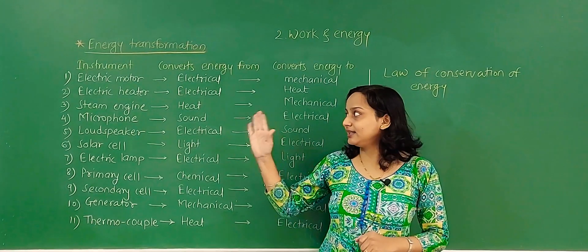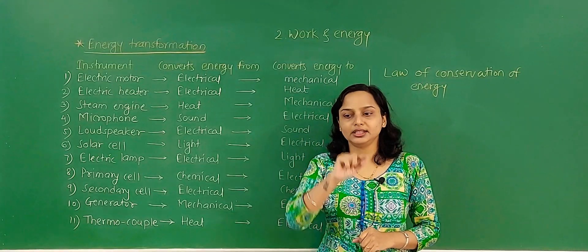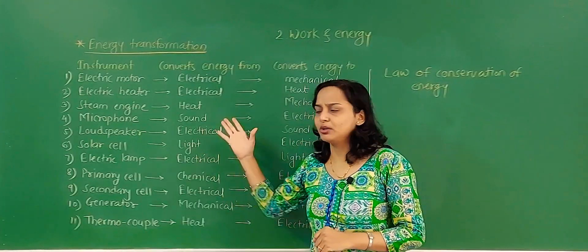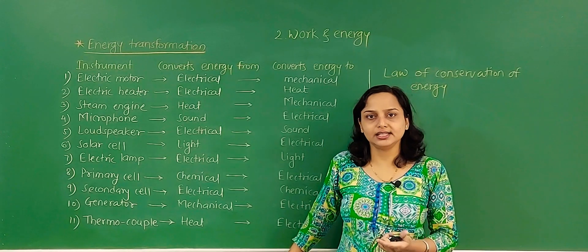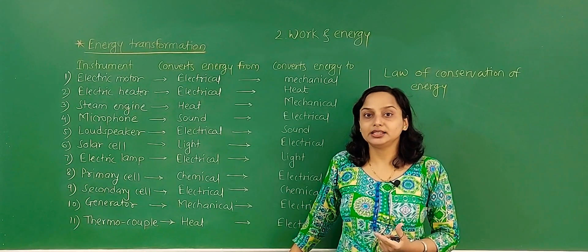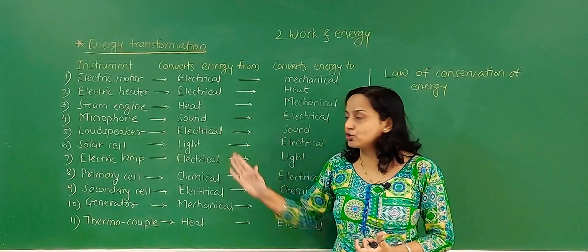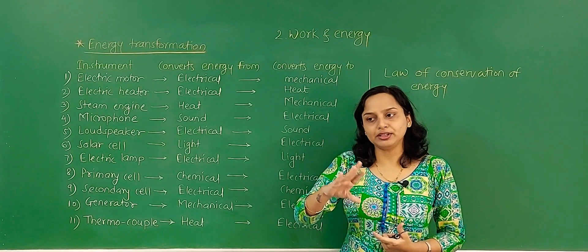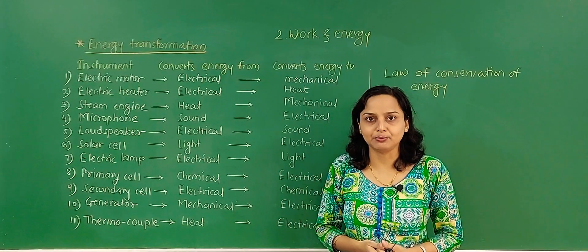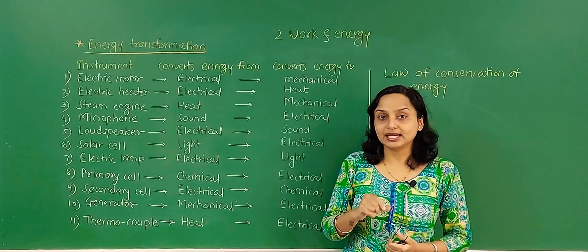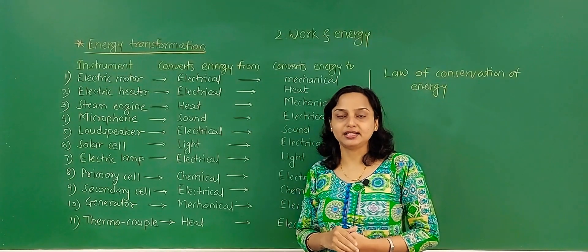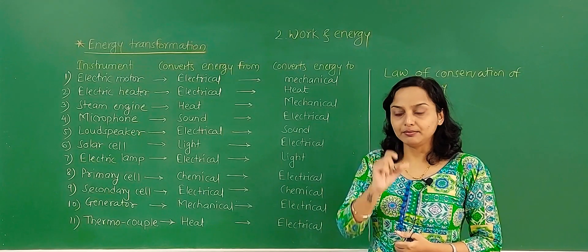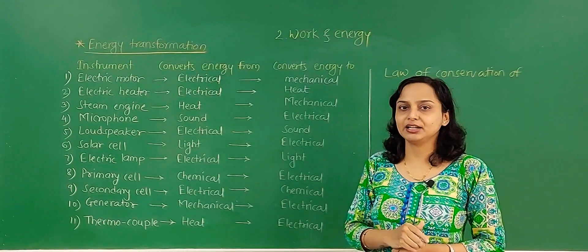Here are some examples. You can see a pictorial representation in the textbook or a table form — it is easy to understand. These cover what instruments convert one type of energy into another type. This is important for 2-3 mark questions, normally MCQs, fill-in-the-blanks, or certain questions.